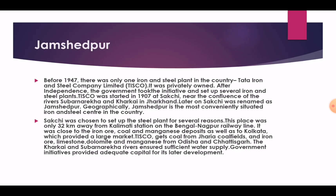Jamshedpur: Before 1947, there was only one iron and steel plant in the country — Tata Iron and Steel Company Ltd., TISCO — and it was privately owned. After independence, the government took the initiative and set up several iron and steel plants. TISCO was started in 1907 at Sakchi, near the confluence of the rivers Subarnarekha and Kharkai in Jharkhand. Later on, Sakchi was renamed as Jamshedpur.